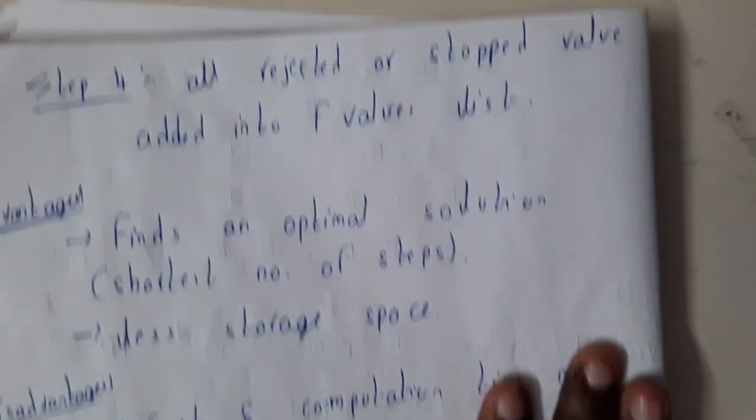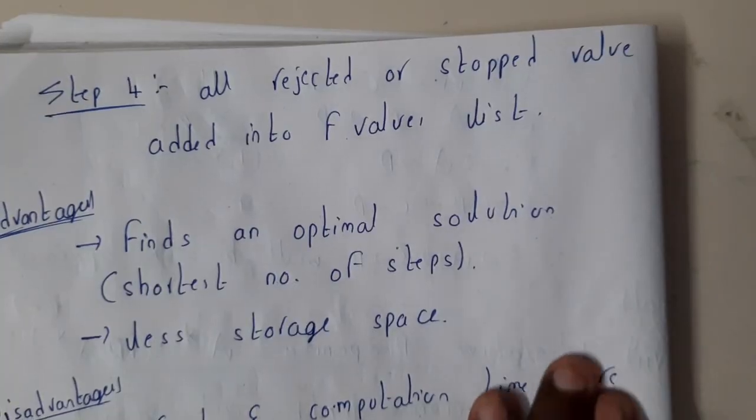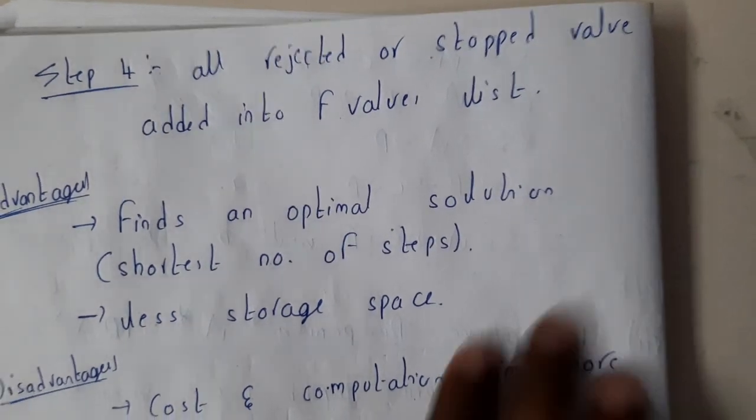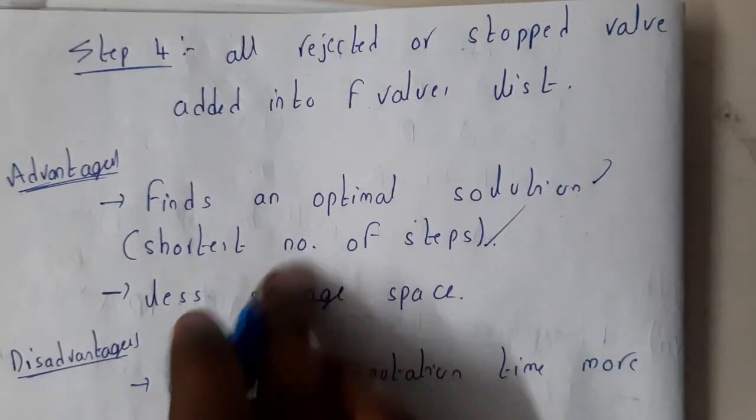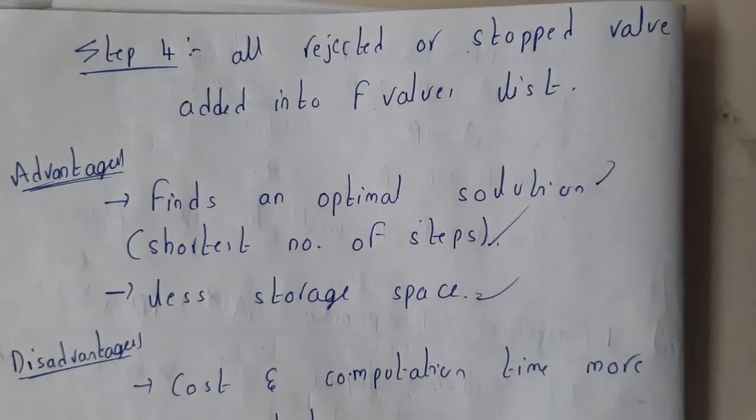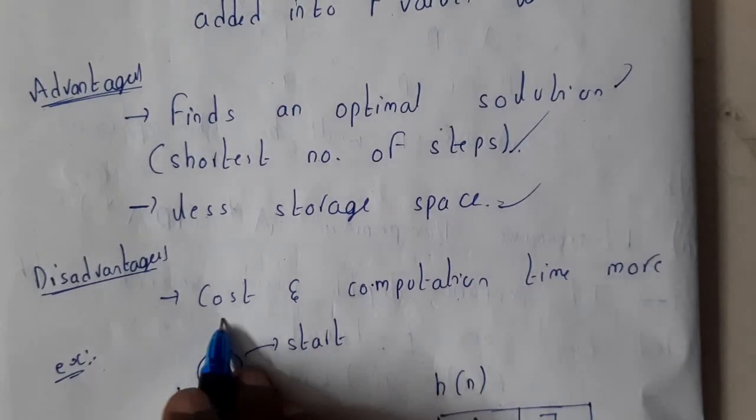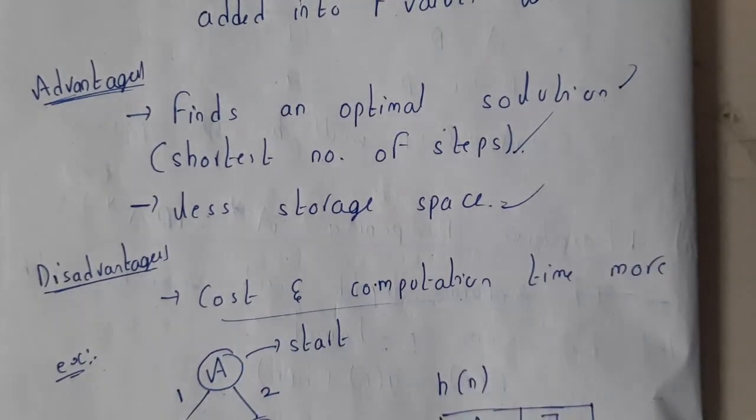Continue till you reach the goal node. So the algorithm is pretty simple for this iterative. So the last step will be once you found it, you will be stopping, that's it. So now let us go through the advantages, disadvantages. Advantages: finding an optimal solution in the shortest steps. Yes, please remember that. And it requires less storage. But the disadvantage is that it takes a long computation time and it's a bit costly.